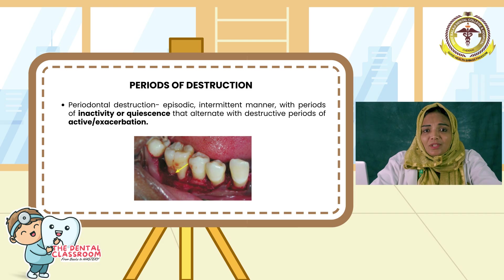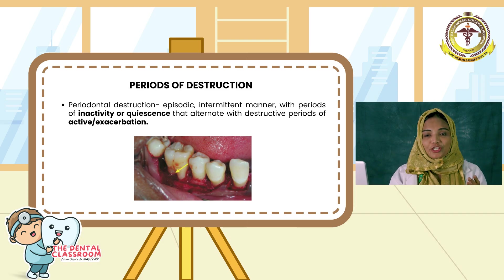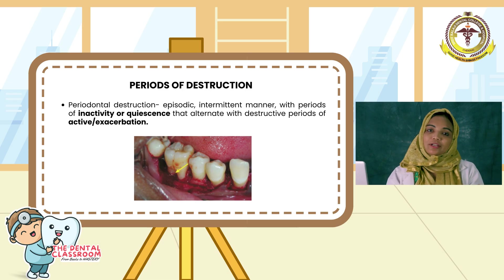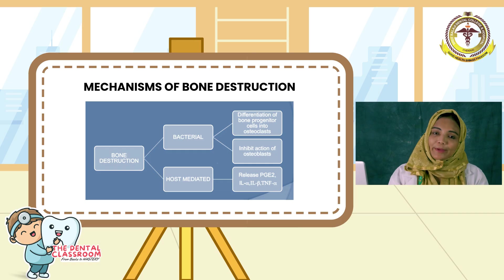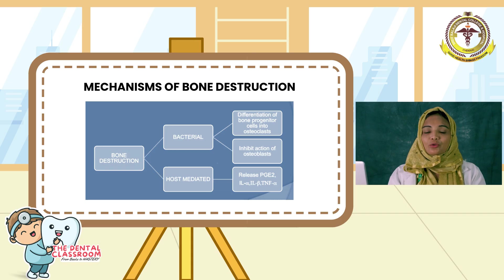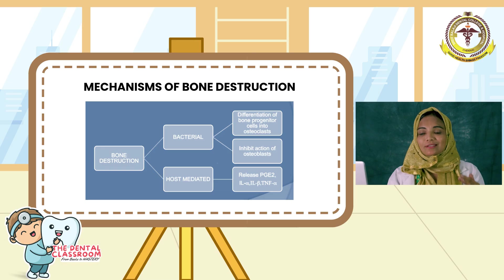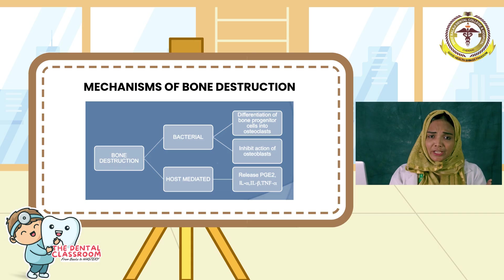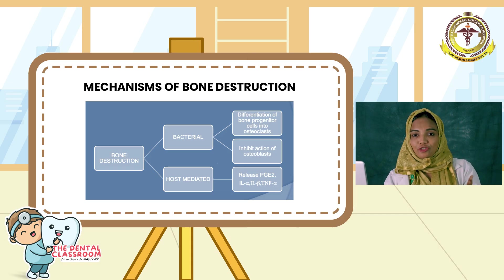Moving on to periods of destruction. As discussed earlier, periodontal destruction is associated with subgingival flora and host immune response having an episodic pattern of destruction. Moving on to mechanism of bone destruction — it can be either bacterial or host-mediated. In bacterial mechanism, the subgingival flora will stimulate the bone progenitor cells to differentiate into osteoclasts resulting in bone destruction. Also, it will stimulate the gingival cells to release inflammatory mediators which also results in bone destruction.